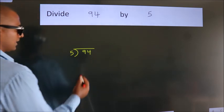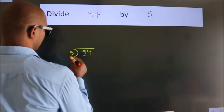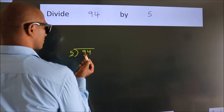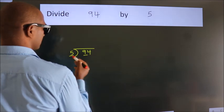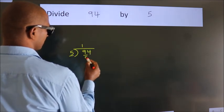Next. Here we have 9, here 5. A number close to 9 in 5 table is 5 once 5.